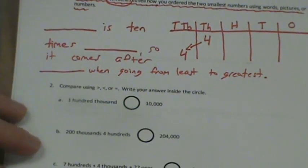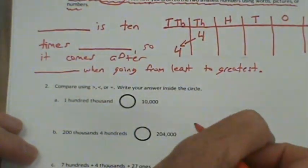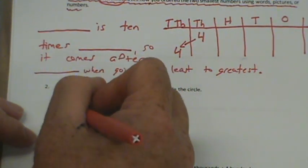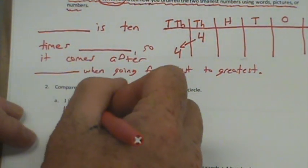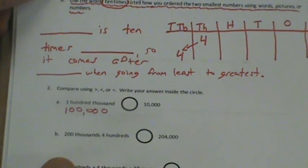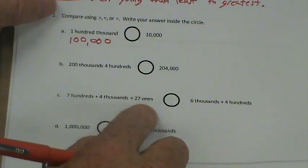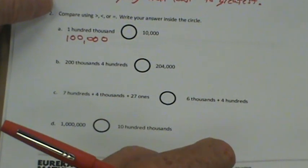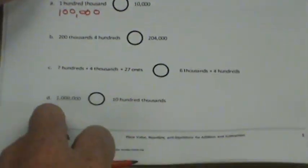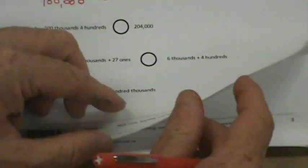Let's go to number two. It says compare using greater than, less than, or equal. Write your answer inside the circle. They're giving it in unit form here. What does one hundred thousands look like? There's one hundred thousand, right? One hundred thousand. So you're going to have to use your knowledge of unit form as well as kind of expanded form there to figure out which one's greater. You need to put the number down here, like I did up here, to really get this right.